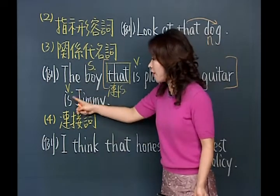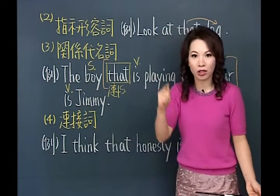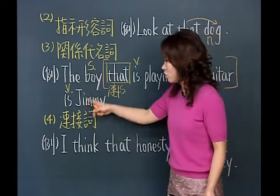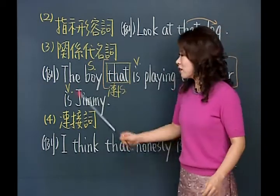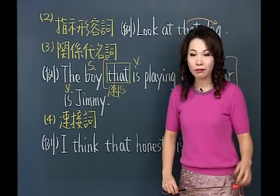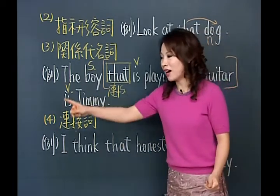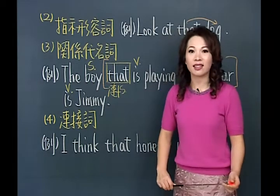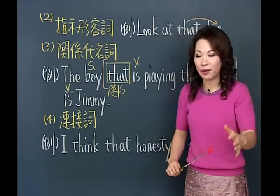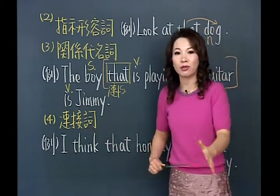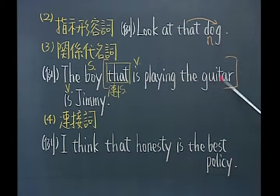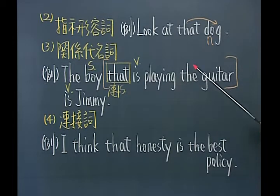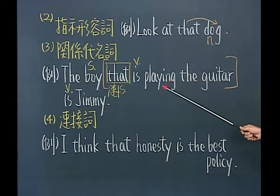把形容词子句框起来后，被排除在外的是不是一个完整的句子：The boy is Jimmy，是完整的。这句话要告诉你：这个男孩是Jimmy，但这里有一堆男孩，哪一个才是Jimmy？所以要讲更清楚：正在弹吉他的那个男孩是Jimmy。两个字以上的修饰要拿到名词的后面，跟中文不一样。